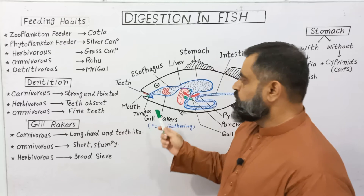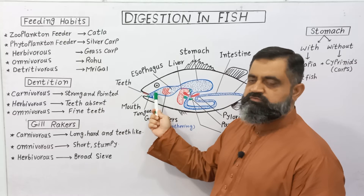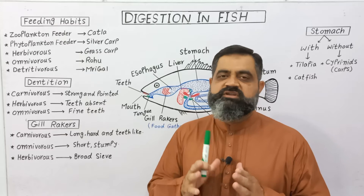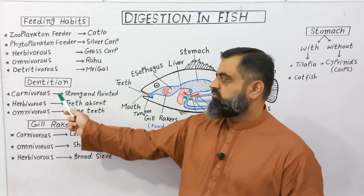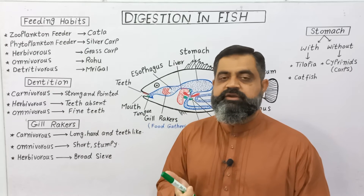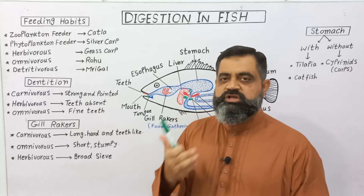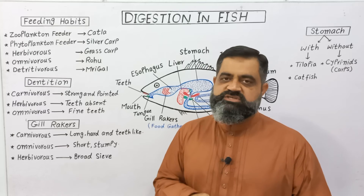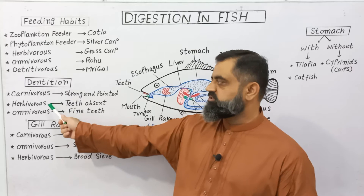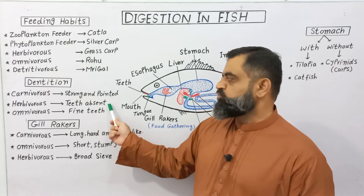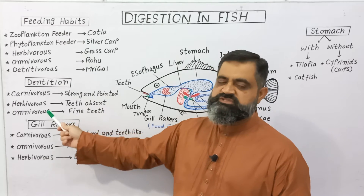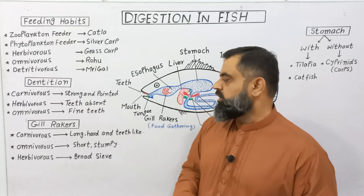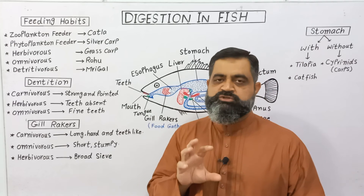Food is taken into the alimentary canal through the mouth. The first part to discuss is teeth, also known as dentition. Fish have different adaptations according to their feeding habits. Carnivorous predatory fish have strong and pointed teeth to kill or grasp other smaller fish and break them into tiny pieces. Herbivorous fish that eat algae and seaweed usually do not have teeth, while omnivorous fish have fine teeth only to grasp food.